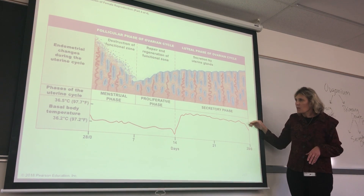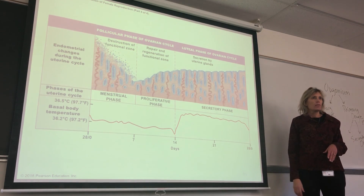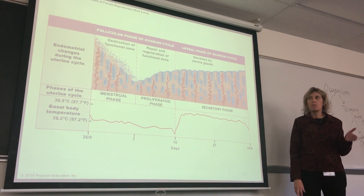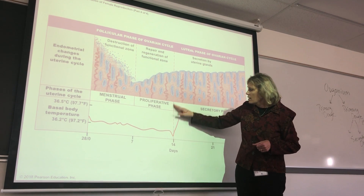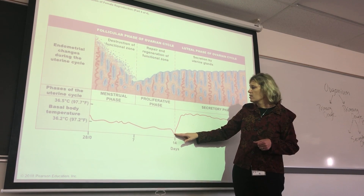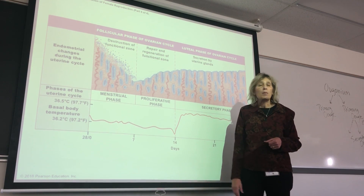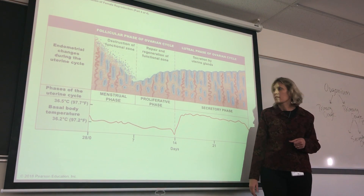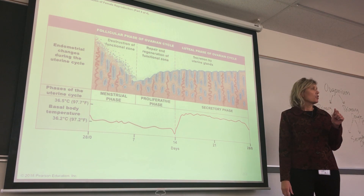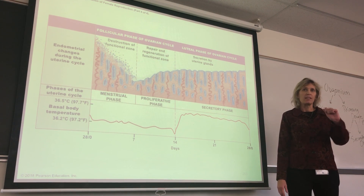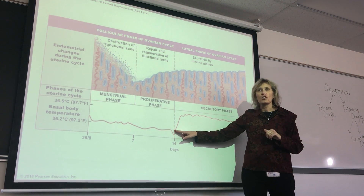At the end of that time, when estrogen levels and progesterone levels plummet, the lining will be shed. A female can identify when she ovulates by a couple of noteworthy signs. Right around day 14, just prior to ovulation, body temperature is going to dip slightly — about 0.3 degrees Celsius or 0.5 degrees Fahrenheit. If she monitors her temperature before getting out of bed and it dips slightly close to day 14, that's an indication that she'll be ovulating that day.